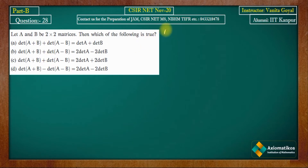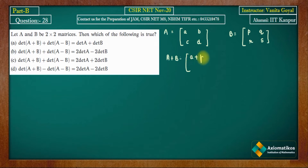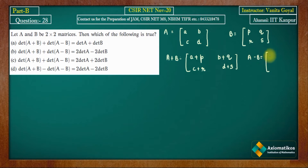Since the matrix is of order 2×2, let's take an arbitrary matrix A and arbitrary matrix B. Let A = [a, b; c, d] and B = [p, q; r, s]. Then A+B = [a+p, b+q; c+r, d+s], and A−B = [a−p, b−q; c−r, d−s].